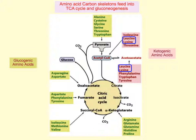There are only two amino acids that are strictly ketogenic: leucine and lysine. The rest can be either ketogenic or glucogenic depending on where they enter, as they have multiple pathways to move into the citric acid cycle.